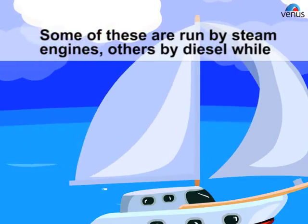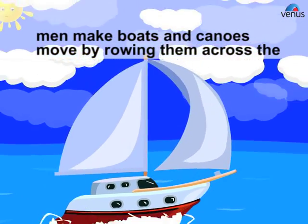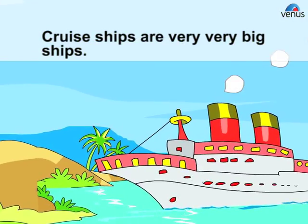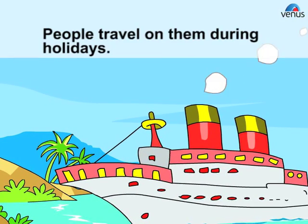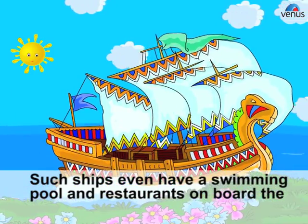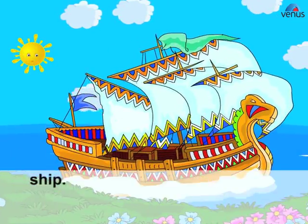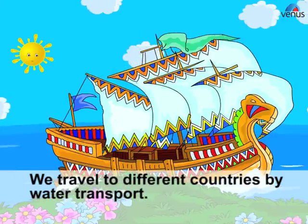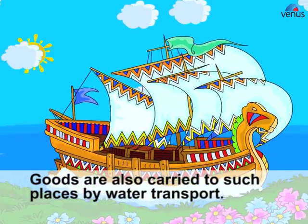Water transport includes ships, boats, and canoes. Some of these are run by steam engines, others by diesel, while people make boats and canoes move by rowing them across the water. Cruise ships are very large ships that people travel on during holidays. Such ships even have a swimming pool and restaurants on board.